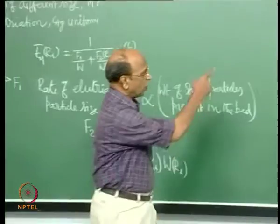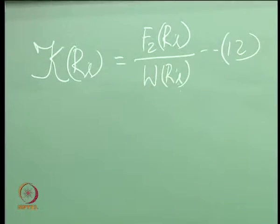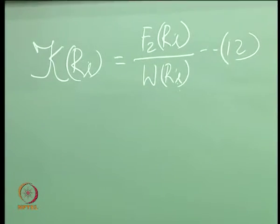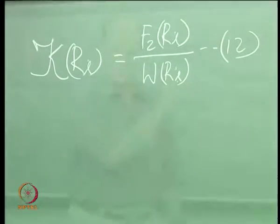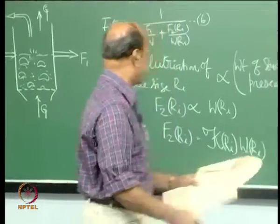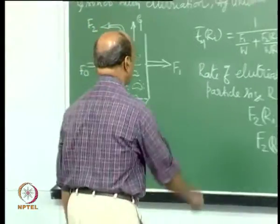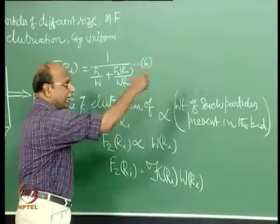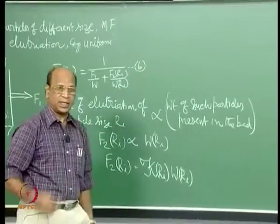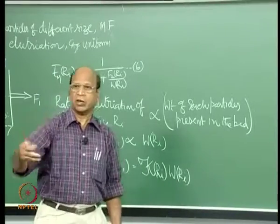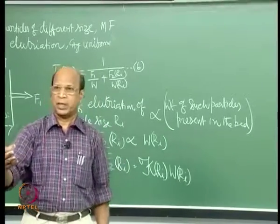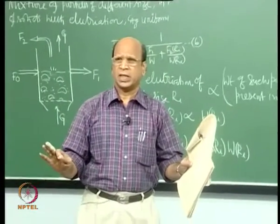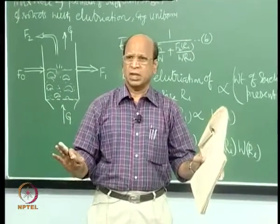This is similar to that, and this is the equation for the elutriation constant. Now, if you observe that F2(r_i) / W(r_i) appears in your t̄_i expression — yes, it is there. So if we can estimate the elutriation constant from experiments — only from experiments, not from theory — we can substitute.